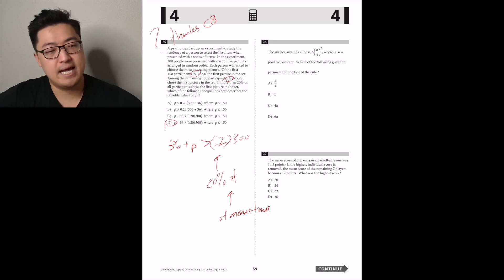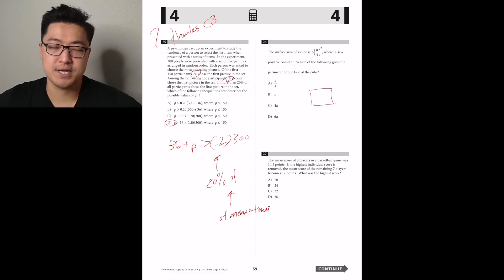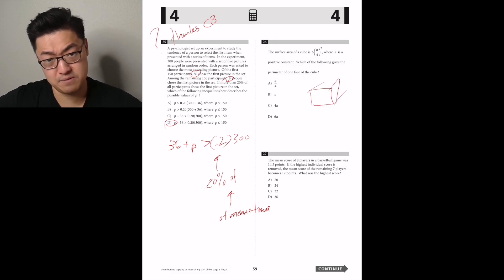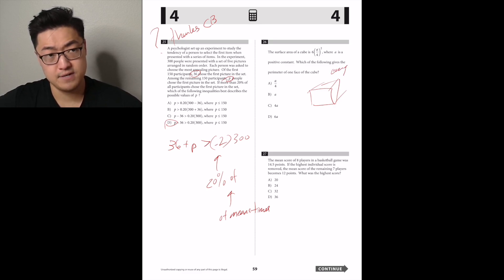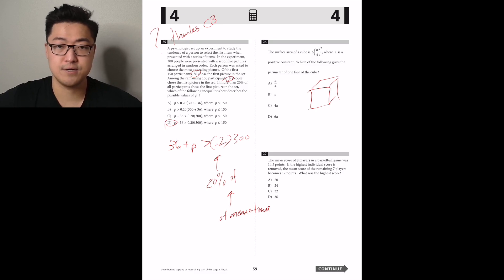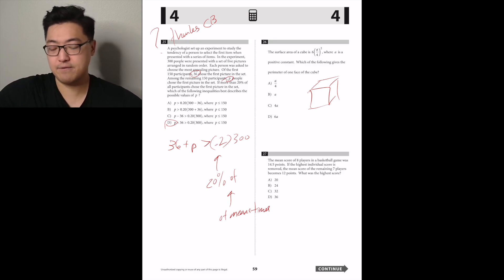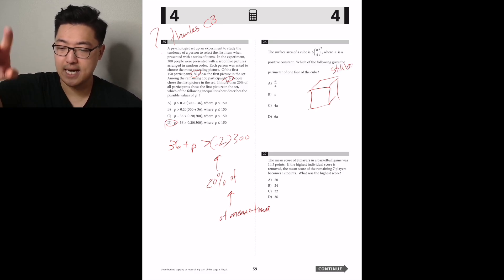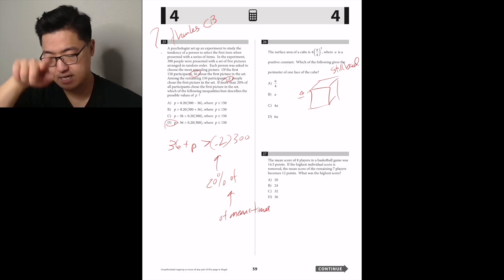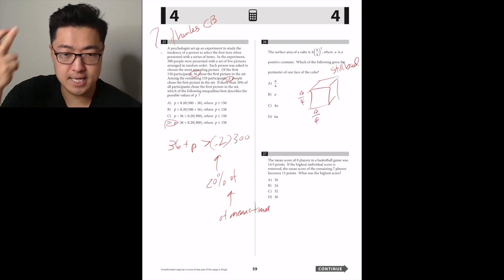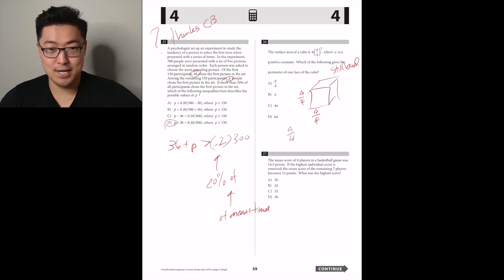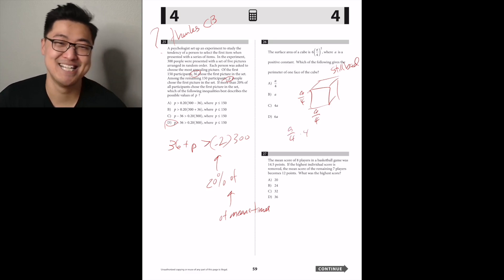The surface area of a cube is 6 times (a over 4) squared, where A is a positive constant. Which is the perimeter of one face? Surface area is 6 times the area of one face, so the area of one face is (a/4) squared. Each side is a/4. The perimeter of one face is 4 times a/4, which equals A. Answer B — the answer choice that says lowercase A.